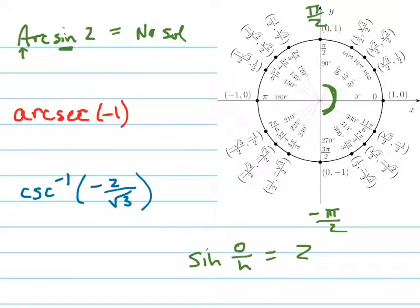The sine of theta equals the opposite over the hypotenuse, and what's always bigger? In a right triangle, what's bigger, the opposite or the hypotenuse? Always the hypotenuse. So is there any way for you to get this to equal 2? There's no way. So this is no solution.